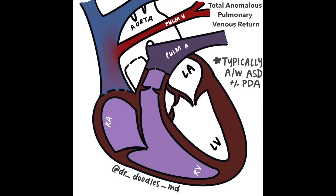Total anomalous pulmonary venous return. Normally, all pulmonary venous return enters the left atrium via the four pulmonary veins. In total anomalous pulmonary venous return, the pulmonary venous return does not return to the left atrium and instead returns to the systemic venous circulation through a variety of anatomic pathways.